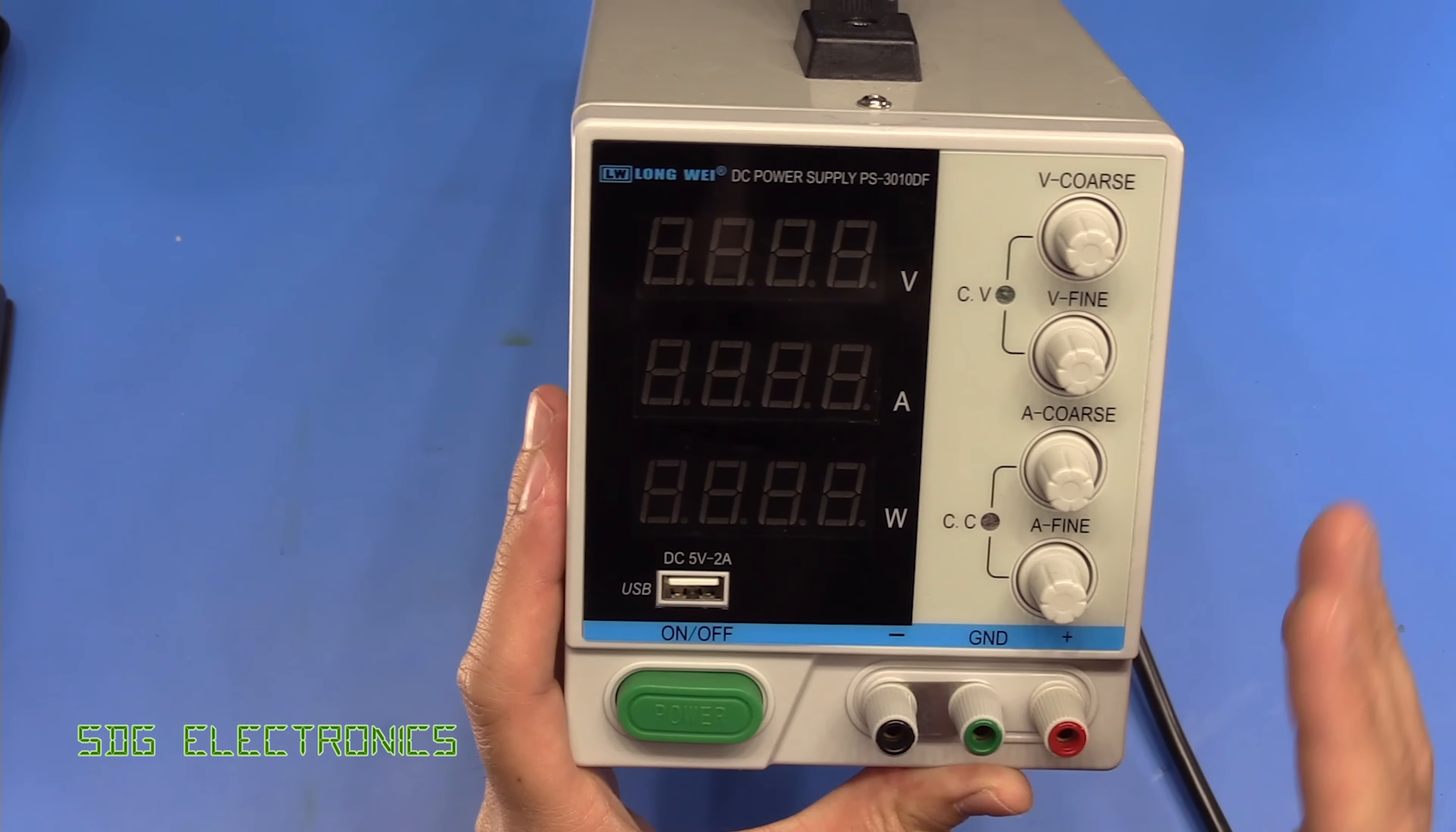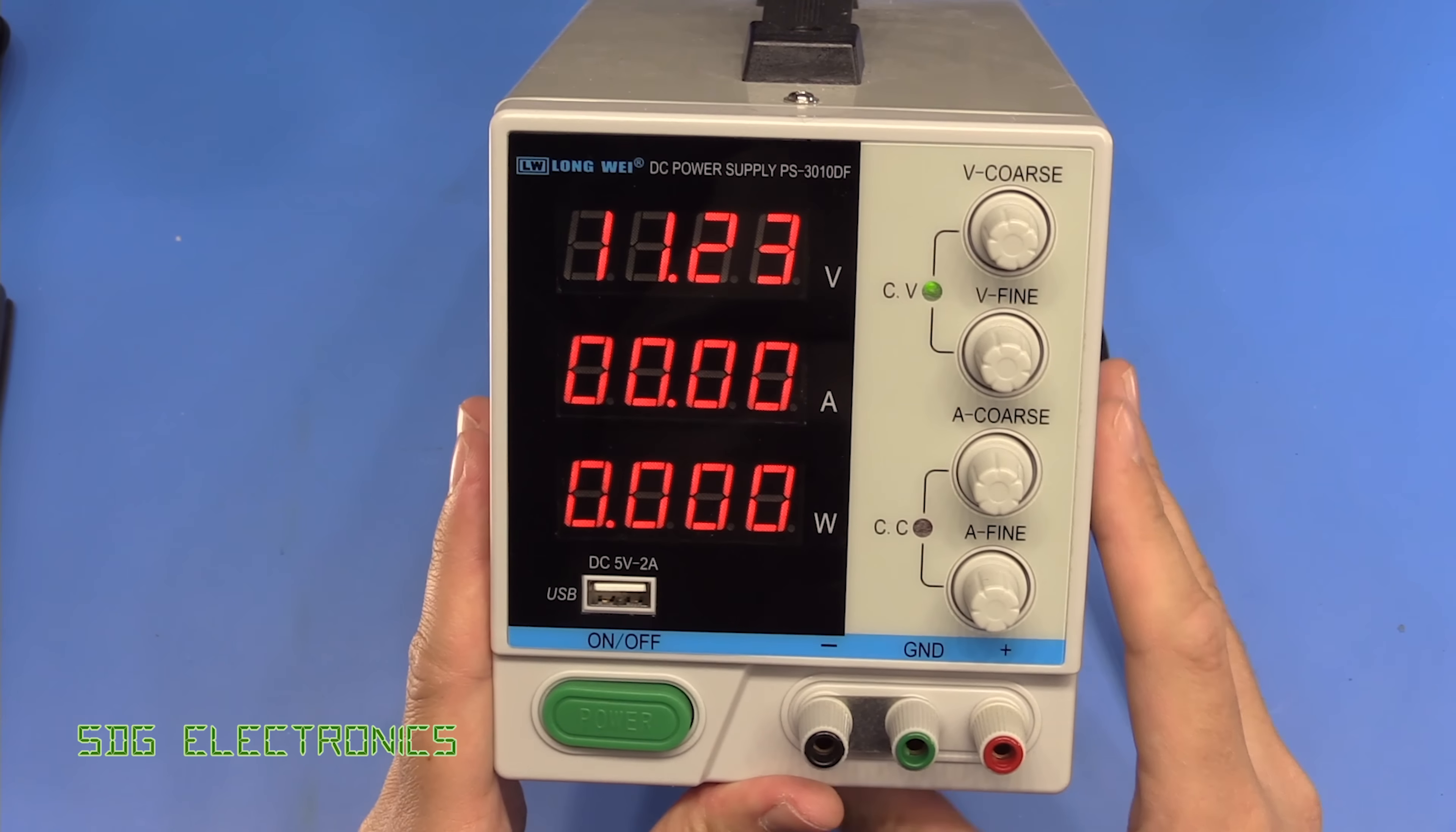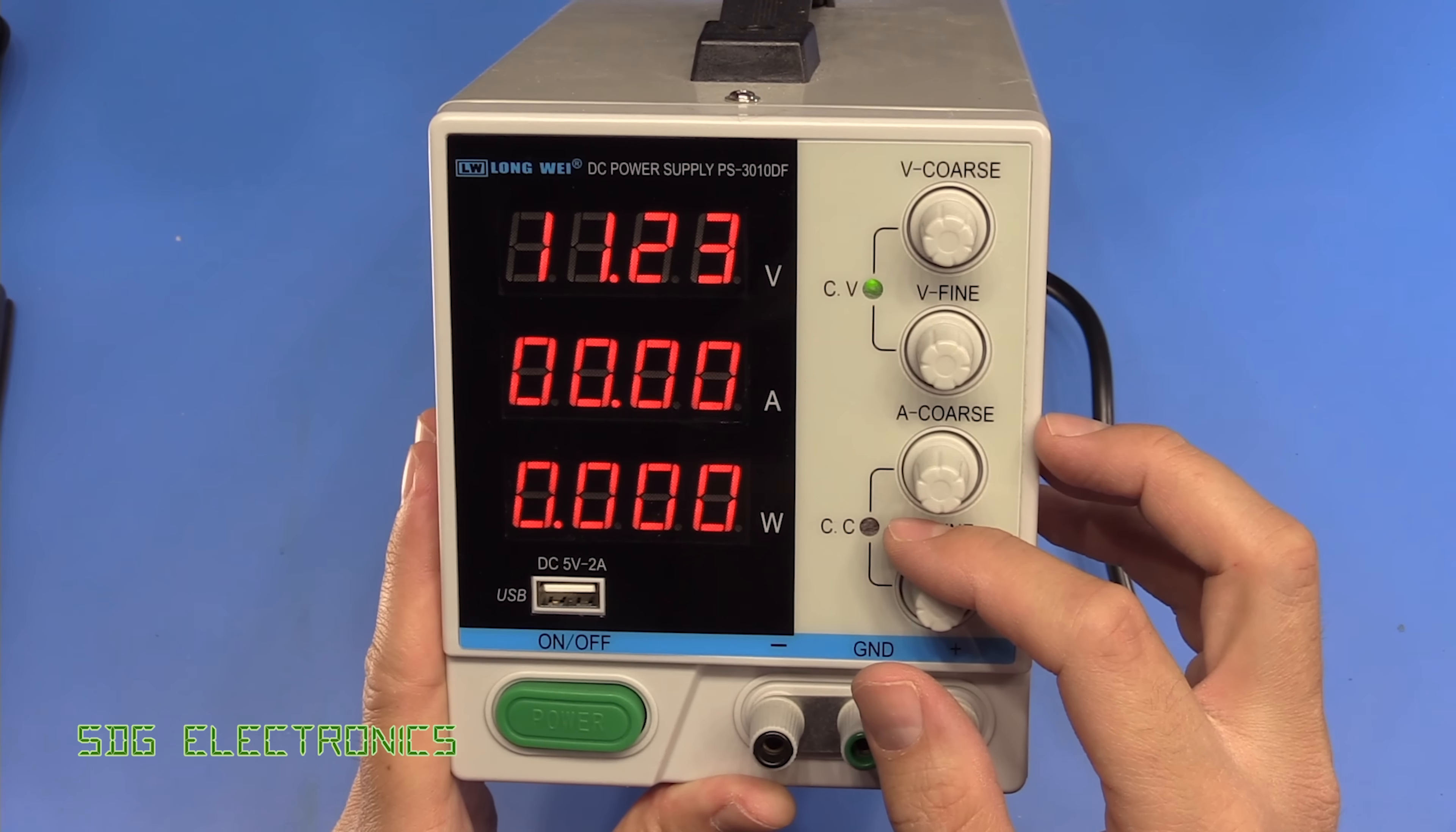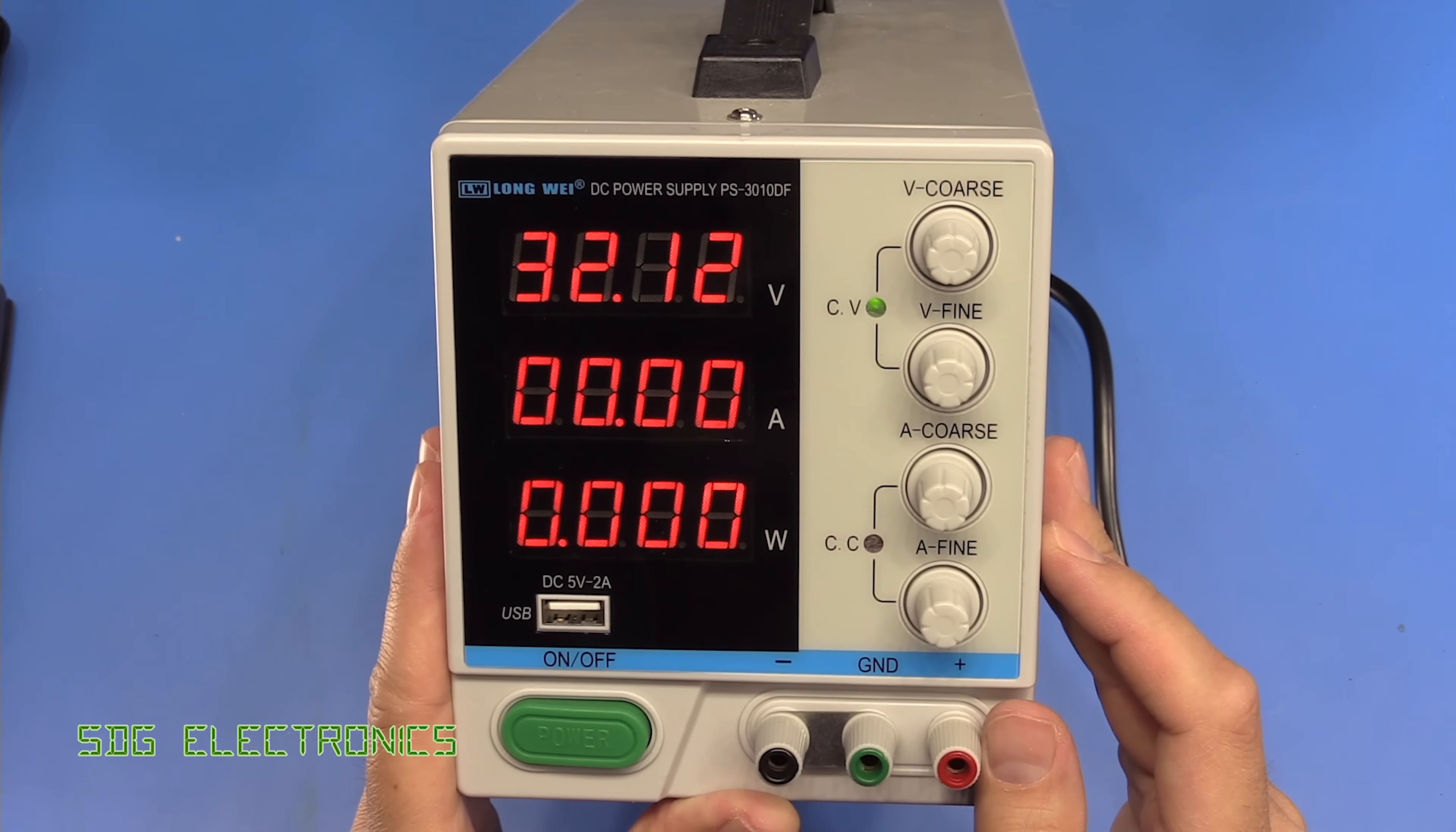Now, the one thing that I do like very much about this power supply is that the display is really nice and bright. So if I turn it on, you've got a really crisp, clear display that is really quite high contrast. It looks really nice by eye and very visible. You've got your standard constant voltage or constant current LEDs on the front, and that's about all there is really to it. So if we turn up the voltage, you can see it updates straight away. There's no sloping up. It just bangs straight there.